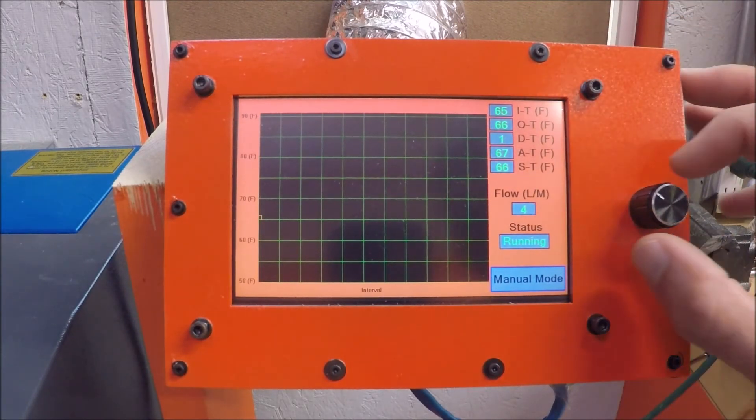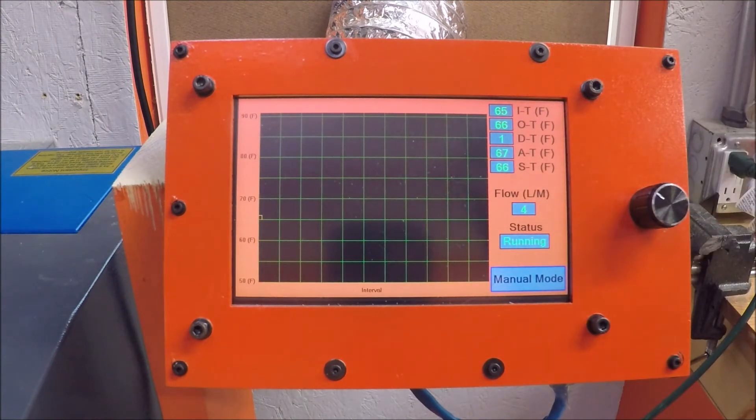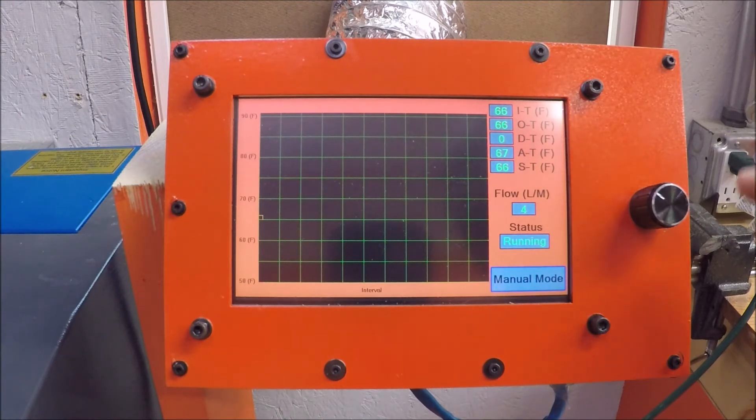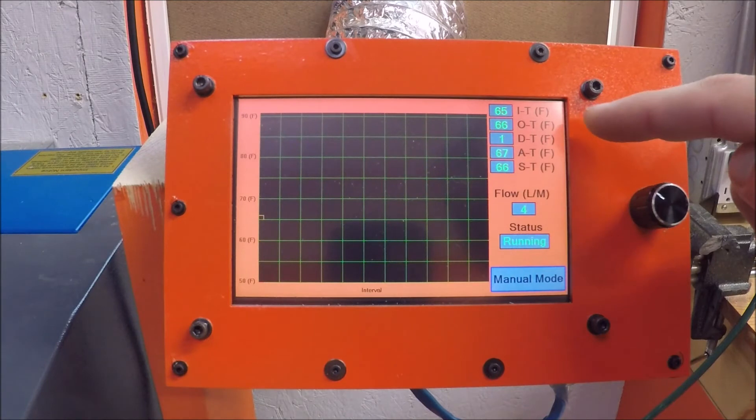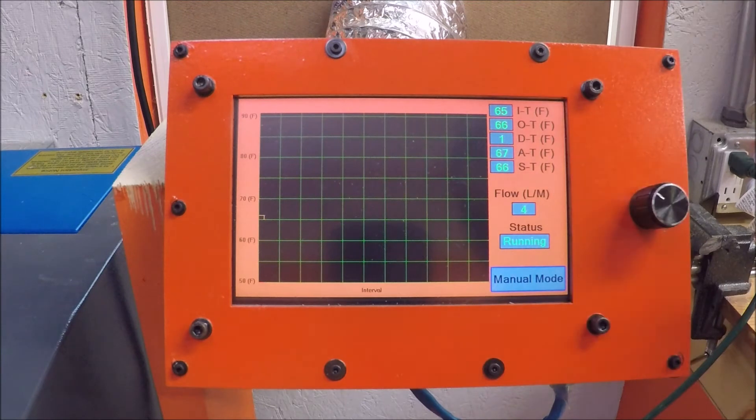You also have this ST. This is a set temperature, and you can move this potentiometer left and right to set that temperature anywhere between 60 degrees, and I think I've got it maxed out at 80 degrees. Now, what this controller will do is it will control the heater and the fans to try to make the output temperature that this chiller outputs match whatever you set it to.